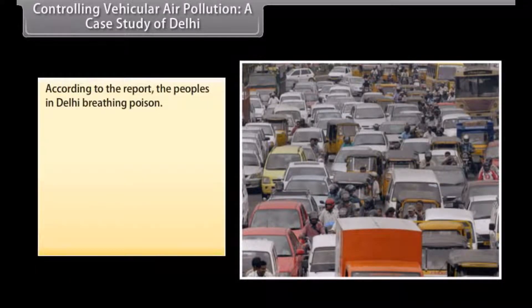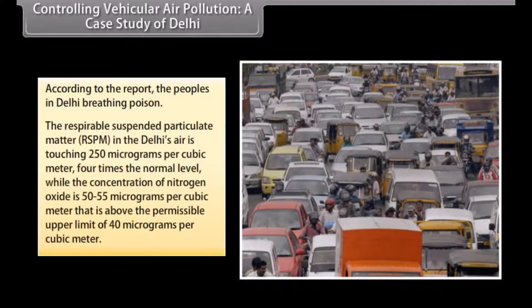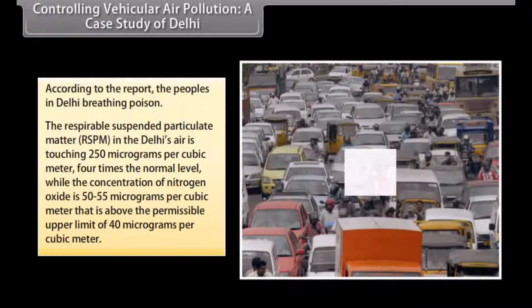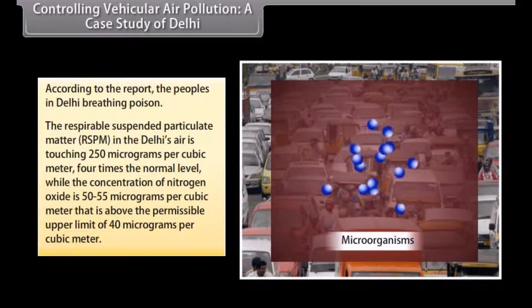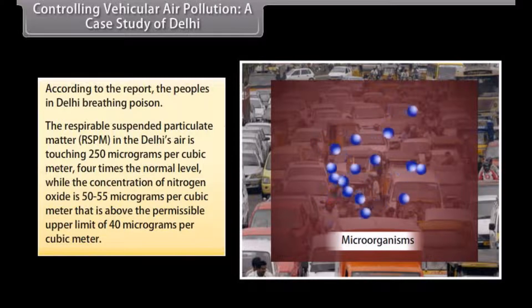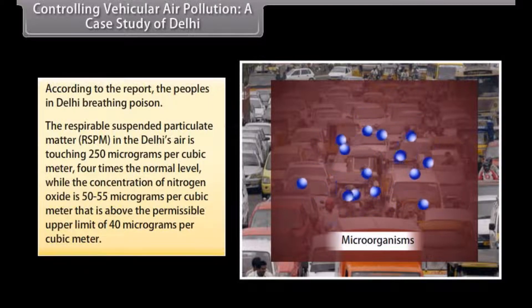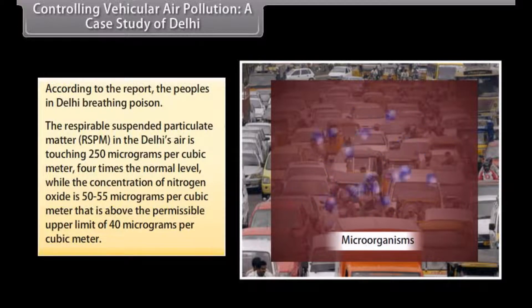According to reports, people in Delhi are breathing poison. The respirable suspended particulate matter (RSPM) in Delhi's air is touching 250 micrograms per cubic meter, 4 times the normal level, while the concentration of nitrogen oxide is 50 to 55 micrograms per cubic meter, above the permissible upper limit of 40 micrograms per cubic meter.